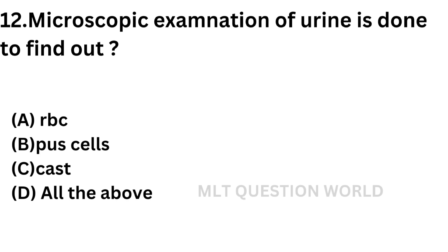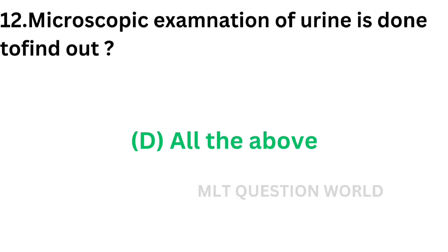Question number 12: Microscopic examination of urine is done to find out. Option A: RBC. Option B: Pus cells. Option C: Cast. Option D: All of the above. Microscopic examination of urine is done to find out formed elements, i.e., RBC, pus cells, cast, crystals, etc. All these elements are detected using microscopic examination of urine. The correct answer is option D: All of the above.